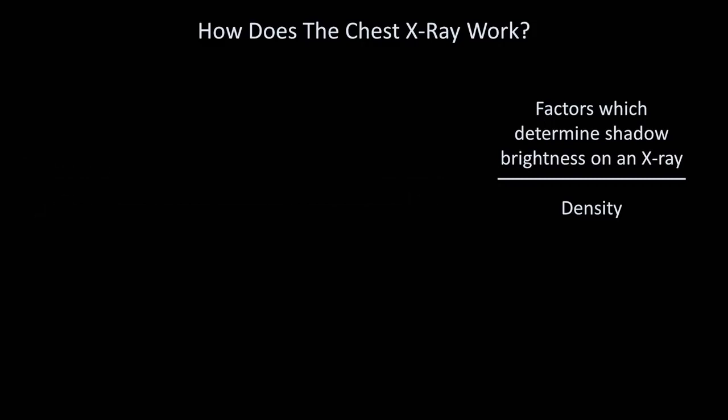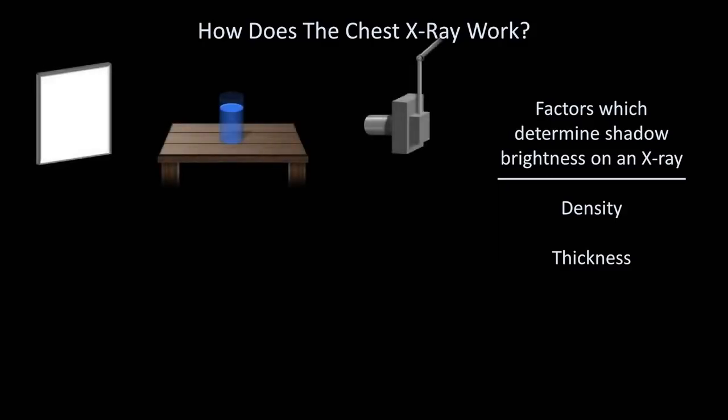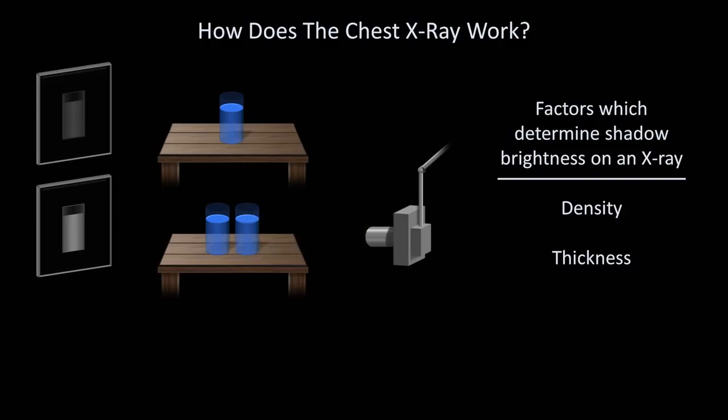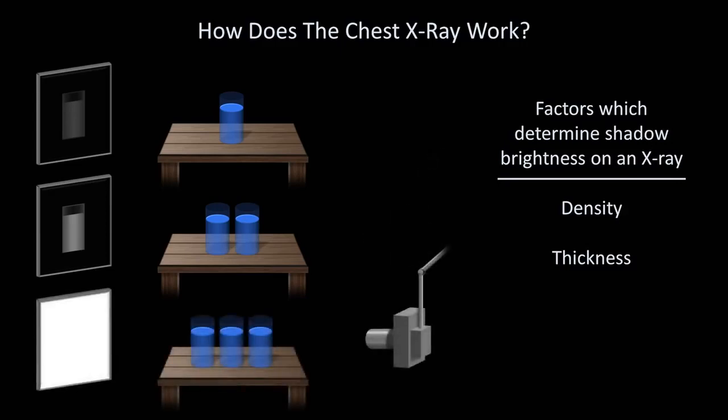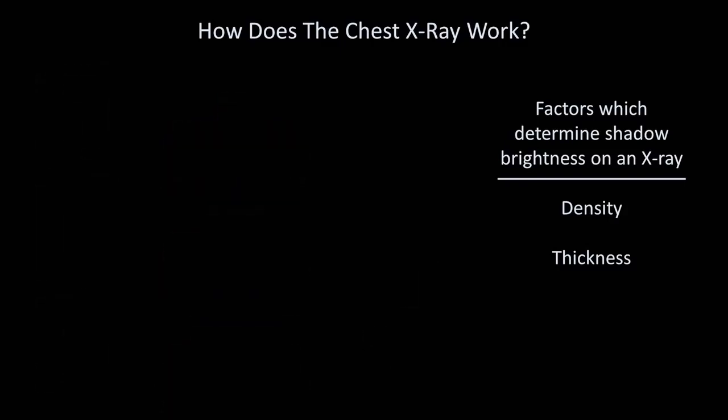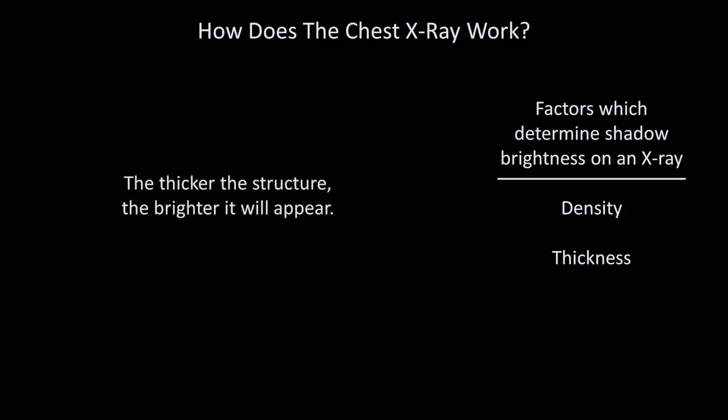The next factor which determines shadow brightness is the thickness of the structure being x-rayed. If we take a single, relatively thin glass of water, and expose it to x-rays, most will pass through, resulting in a very dark image on the film. If instead of one glass of water, we line up two glasses in a row, and shoot x-rays through both, twice as many will be blocked. The resulting image will therefore be more gray, because the specific part of the film corresponding to the shadow of the glasses have been relatively less exposed. Finally, if we shoot x-rays through three glasses of water, the image of the glass will be brighter still. In summary, the thicker the structure, the brighter it will appear on the x-ray film.